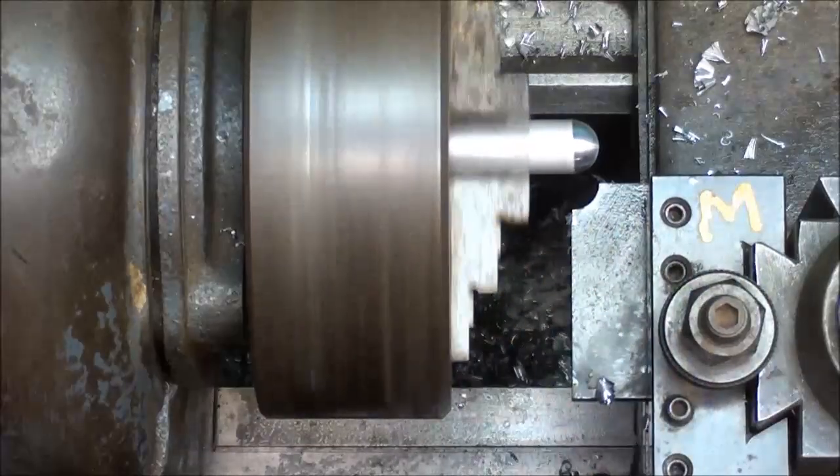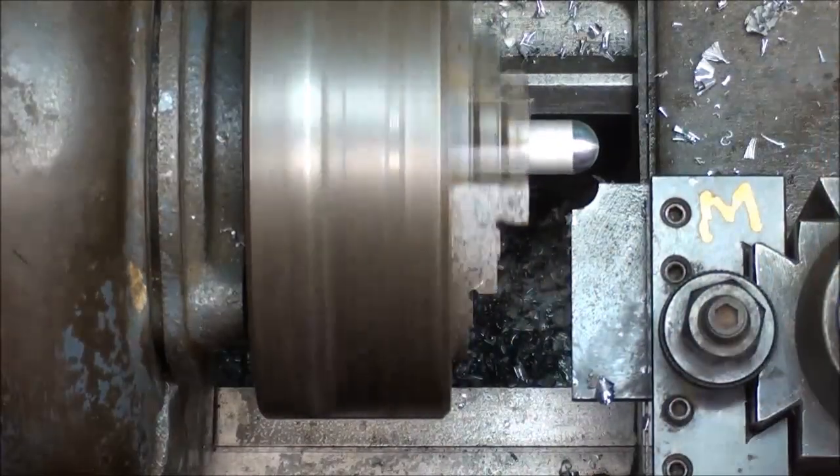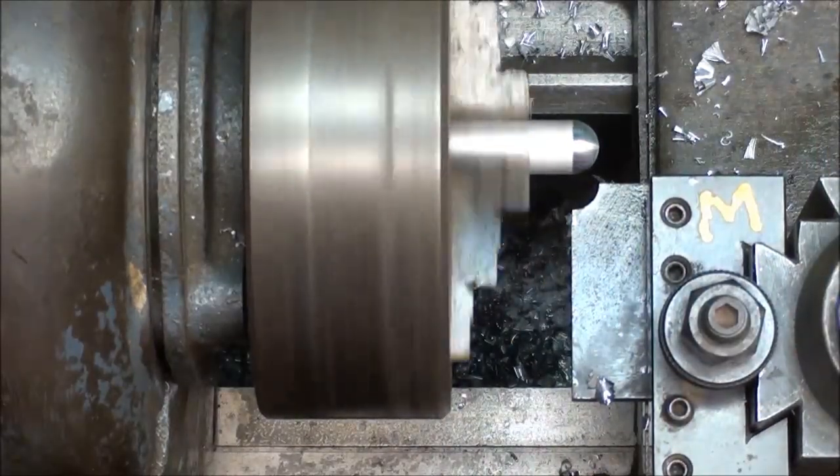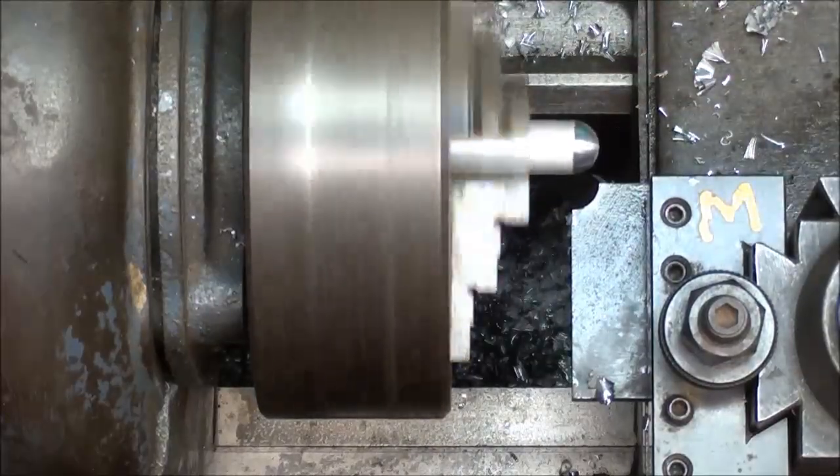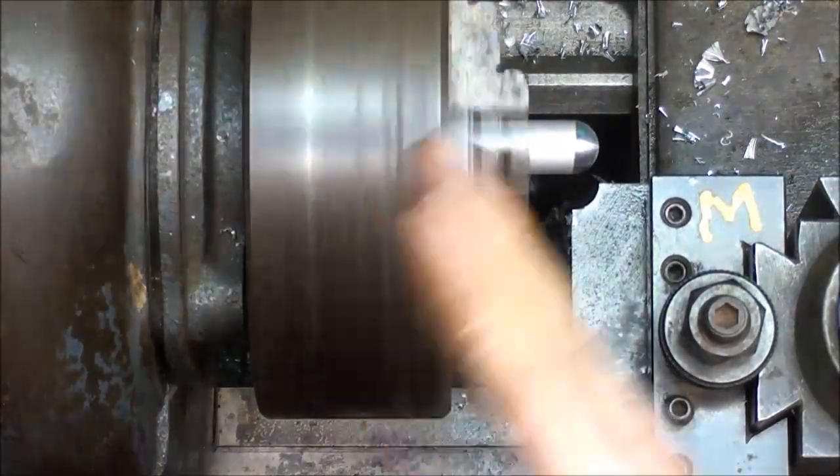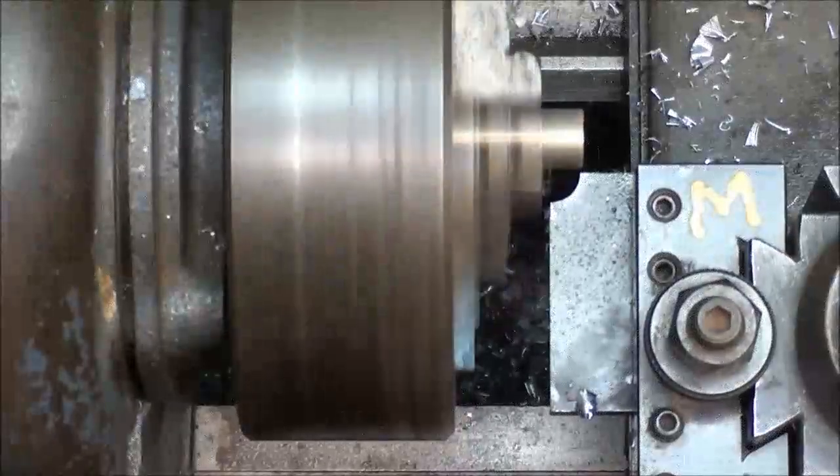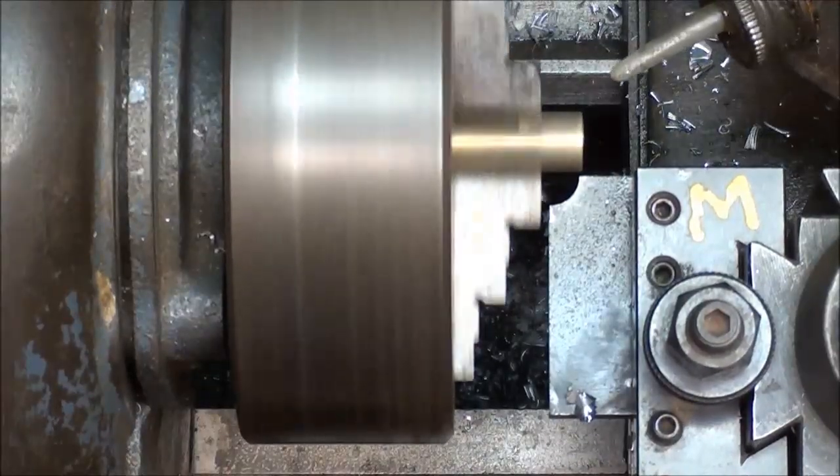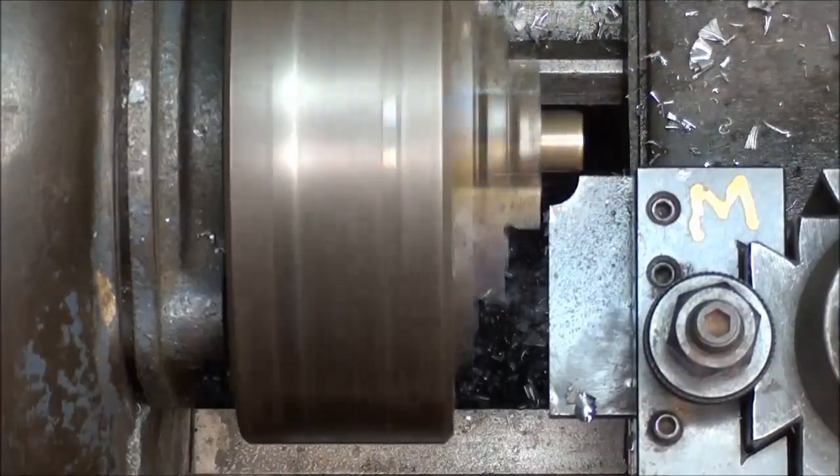Now if there's a little wobble there it's because the chuck is slightly out of whack and the work may be slightly bent as well. That's why you see a little bit of that wobble. Now we have half inch brass which will give us a quarter inch radius.